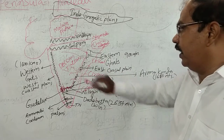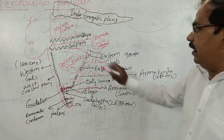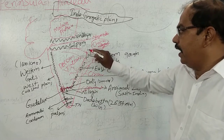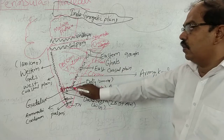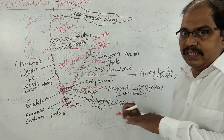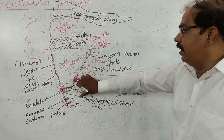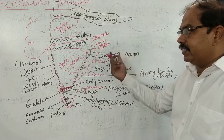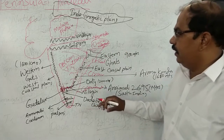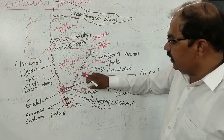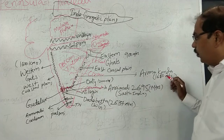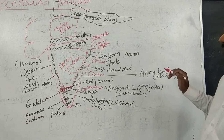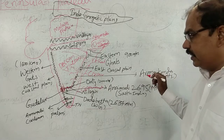Now coming to the Eastern Ghats: they extend from the Mahanadi valley in the north to the Nilgiri Hills in the south. The Eastern Ghats are broken by rivers like the Godavari, Krishna, Kaveri, and Penna. The highest peak in the Eastern Ghats is Arma Konda, at a height of 1680 meters.